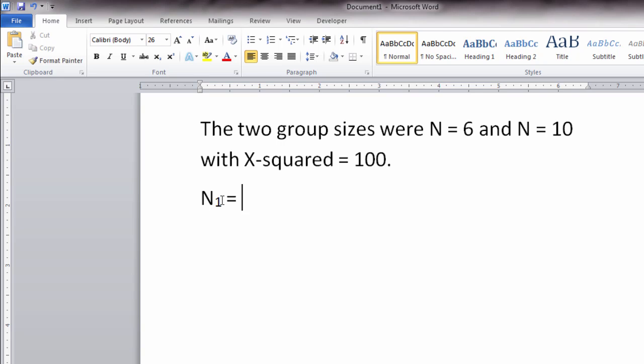So N₁ equals 6 and N, let's try this again. We can select this button once again to get that cursor in the subscript format, N₂, and then don't forget to select it again to turn that off. N₂ equals 10.